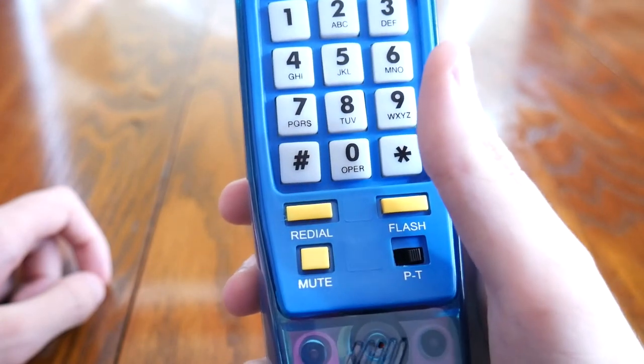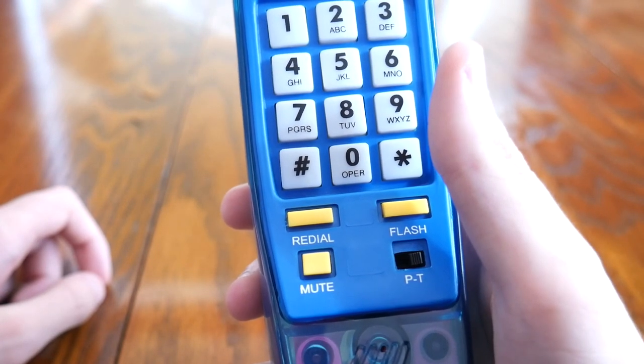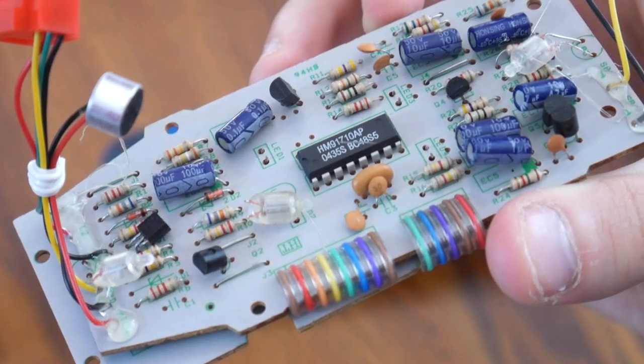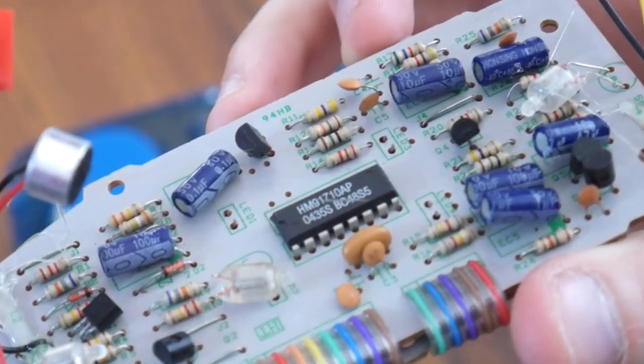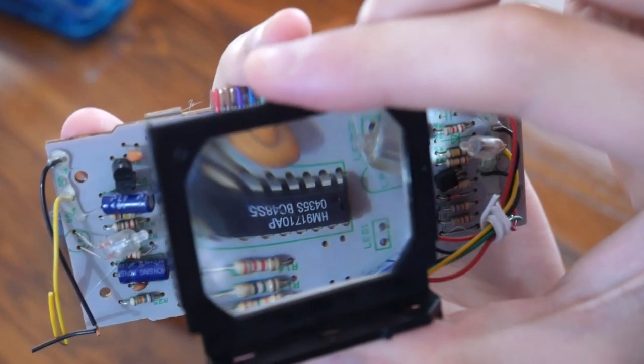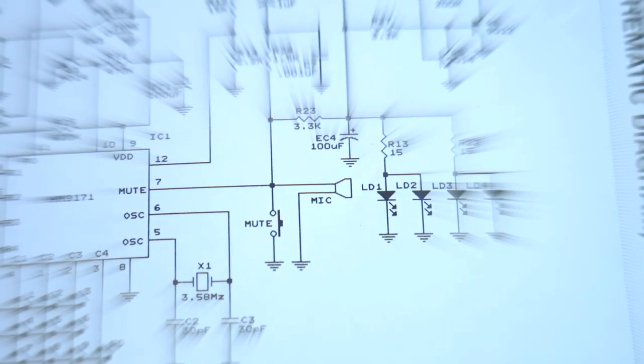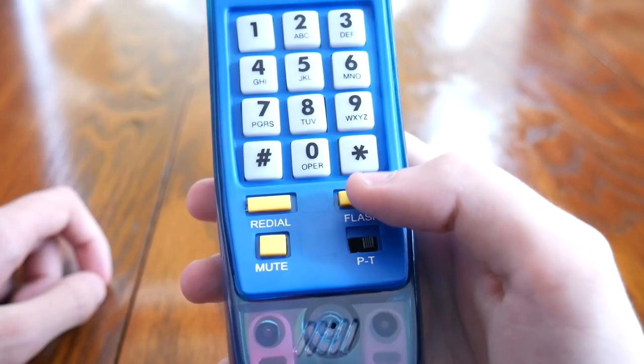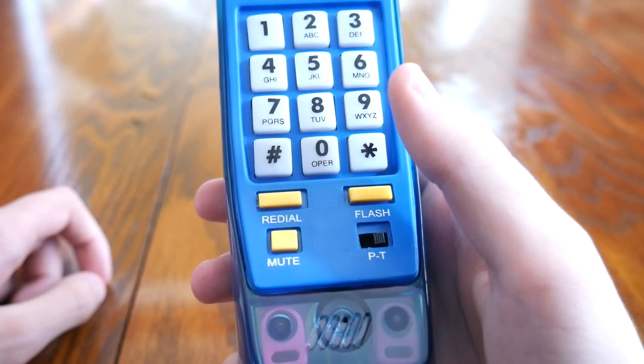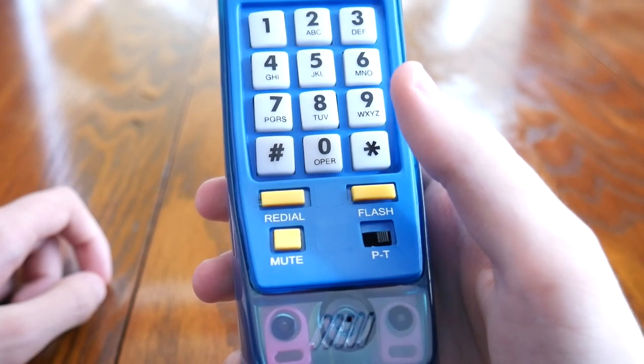Redial. The HM91710 chip can remember the last number that you dialed, up to 32 digits for a quick redial. This is all done within the chip. Mute. Shorts the microphone to ground so it generates no electrical signal. Flash. If you don't want to put the phone back on the hook, pressing Flash will get a dial tone back.